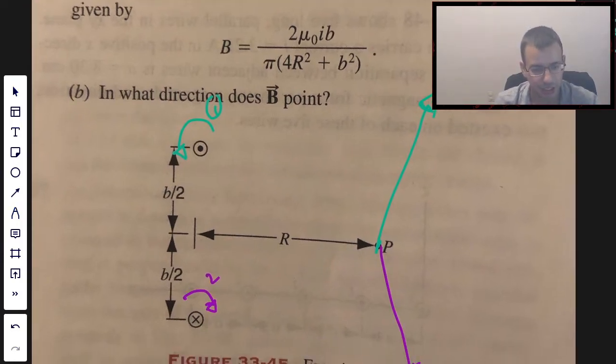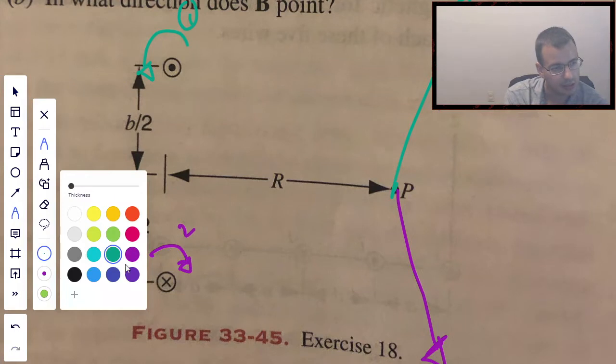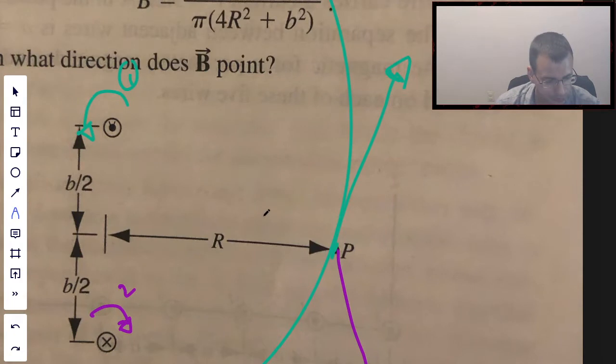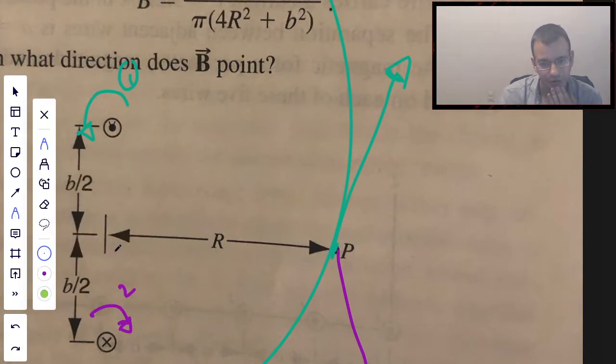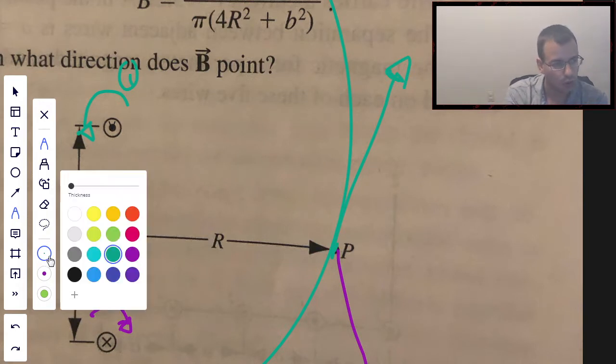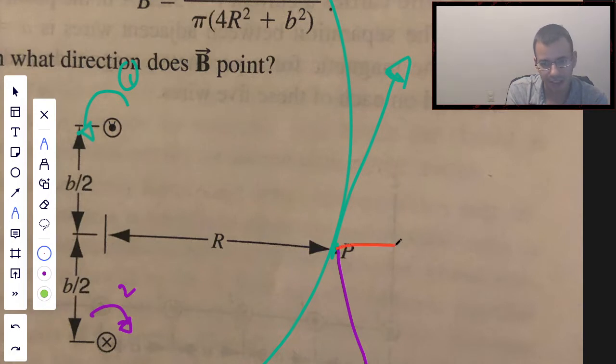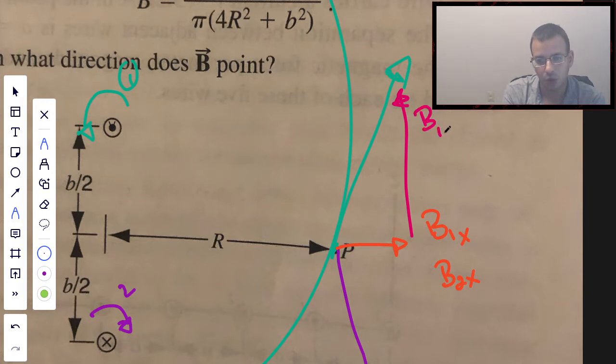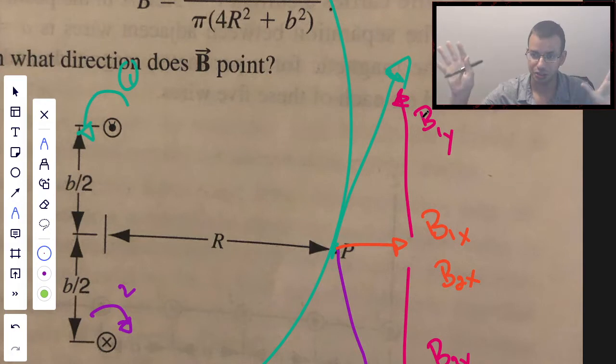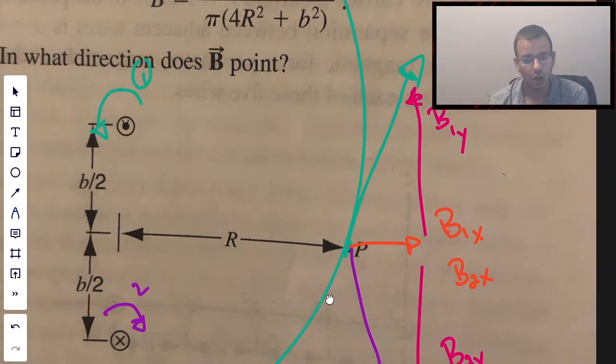Now we've got the vectors taken care of. From this point, we can see that we want to do sine and cosine to figure these angles out. We can tell just by looking at these and some basic symmetry that the y components are going to cancel each other out. So all we're really concerned with here is the x component.